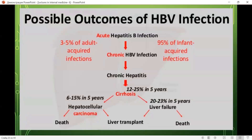Regarding possible outcomes of hepatitis B infection: acute hepatitis B progresses to chronic infection in 3–5% of adult-acquired infections and 95% of infant-acquired infections. Chronic hepatitis B may progress to cirrhosis in 12–25% over 5 years, and cirrhosis may lead to hepatocellular carcinoma and liver failure, both of which may result in death or liver transplantation.